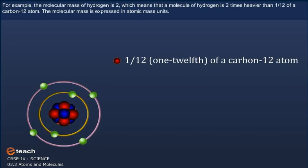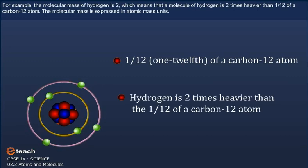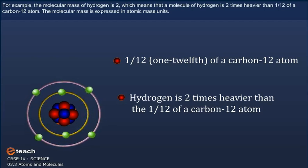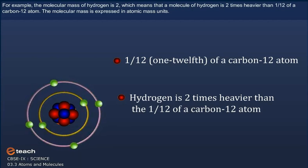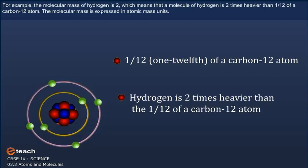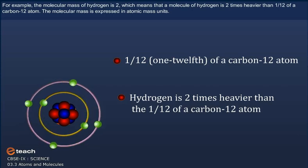For example, the molecular mass of hydrogen is 2, which means that a molecule of hydrogen is 2 times heavier than the 1/12th of a carbon-12 atom. The molecular mass is expressed in atomic mass units, i.e., u.